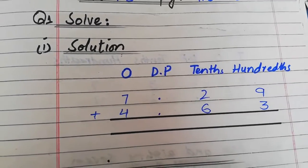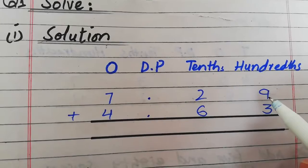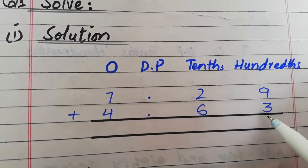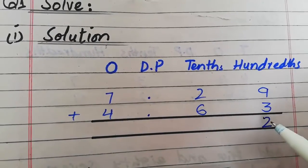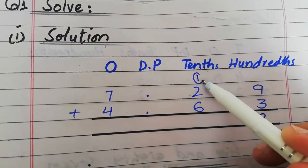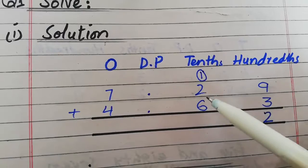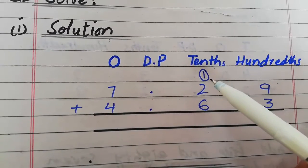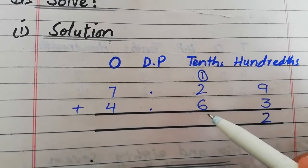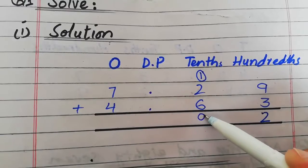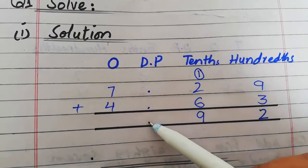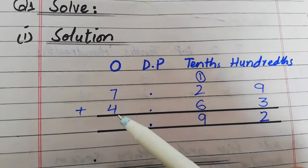پہلے hundredths column plus کریں گے: nine plus three is equal to twelve۔ Two hundredths میں لکھیں گے اور one carry ہو جائے گا tenths میں۔ Tenths column میں: one plus two plus six is equal to nine۔ پھر decimal point لگائیں گے — point کی نیچے point ہوگا۔